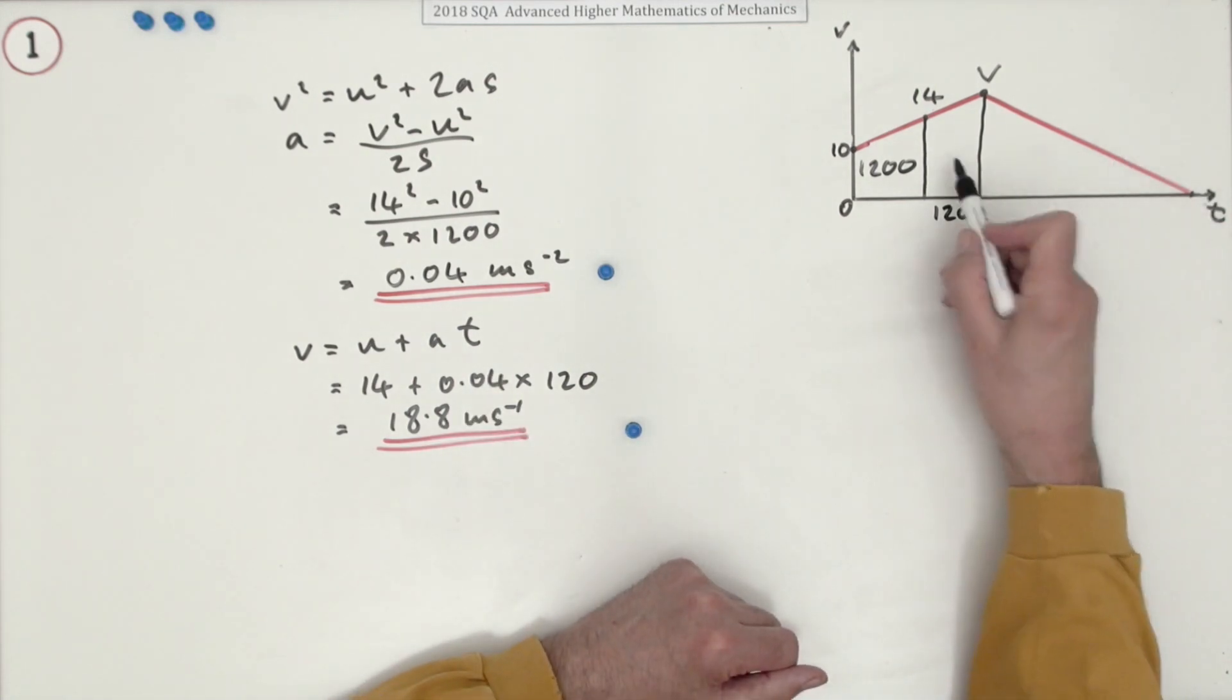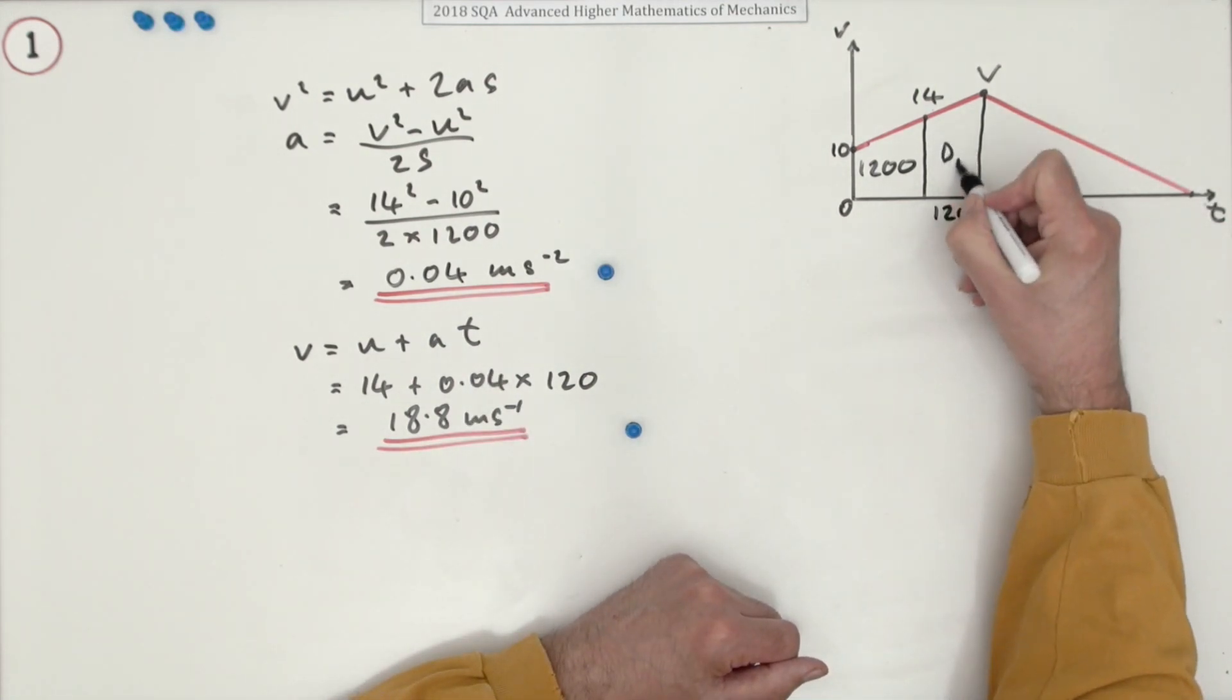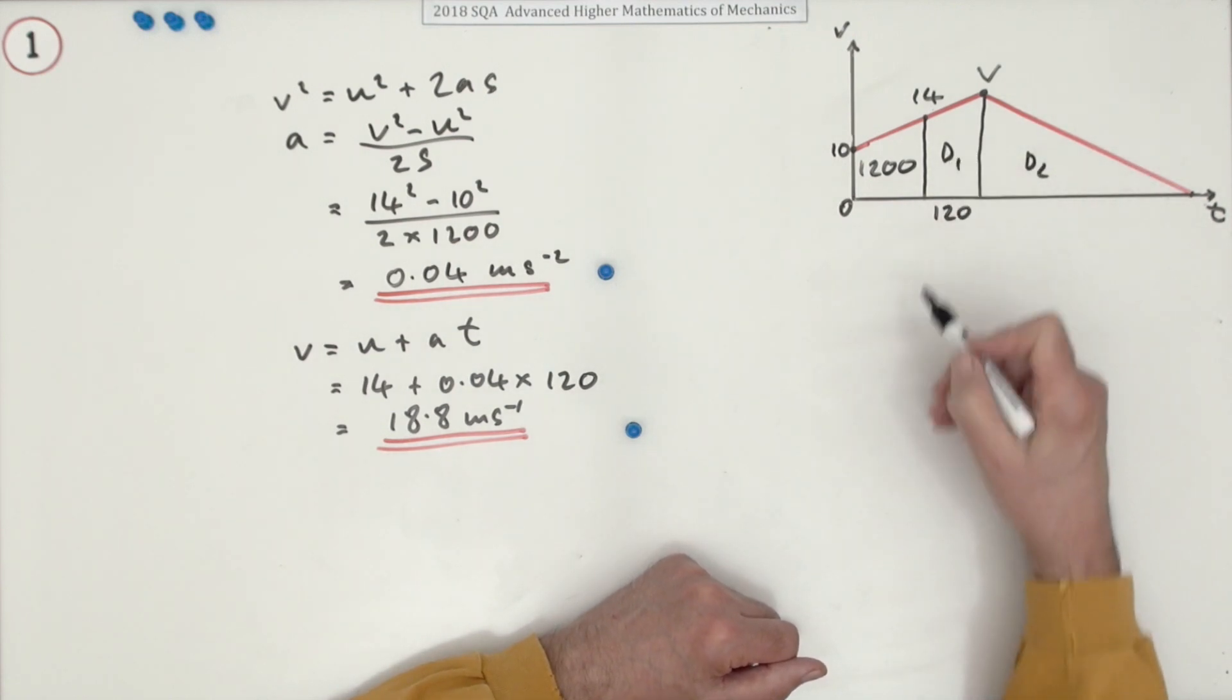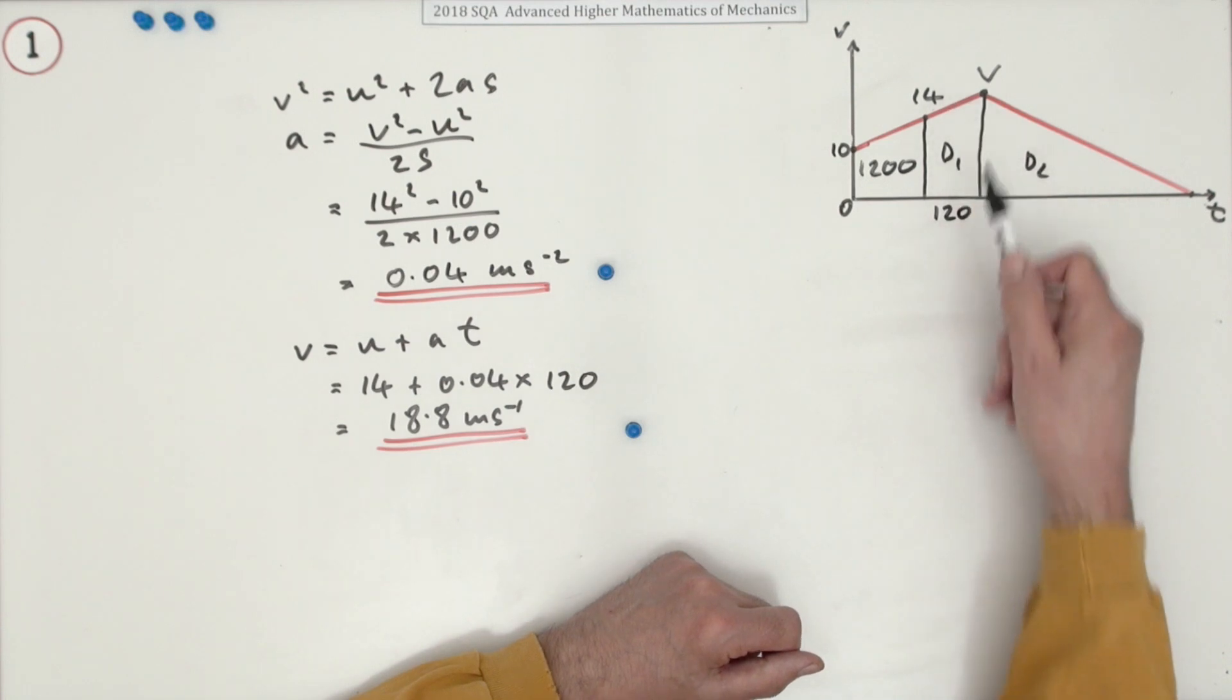Now you've got all the information you need to find the remaining two distances. Distance one and distance two. Now distance one, what have we got for this? We've got both speeds, we've got the acceleration, we've got the time, we've got just about everything we need.